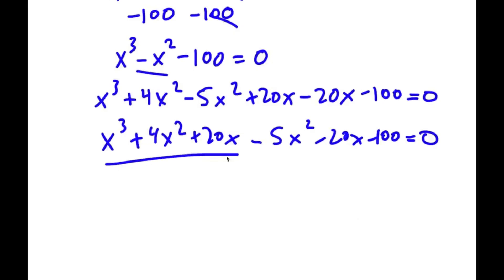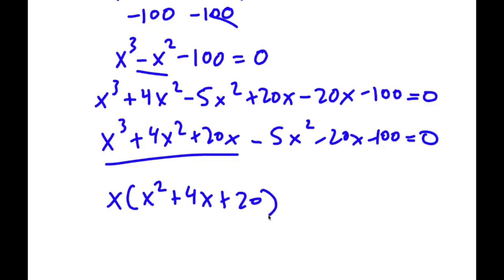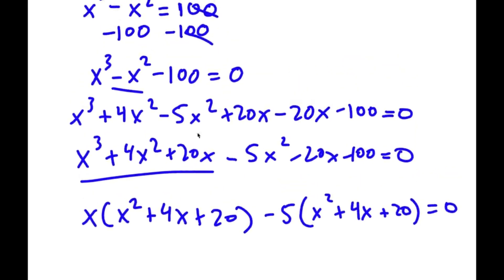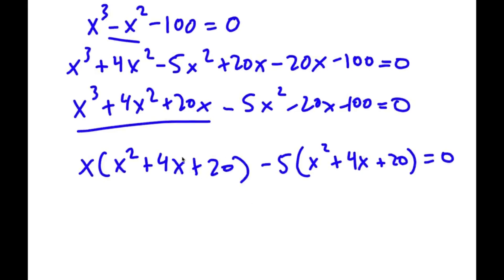Now, from here, what is the greatest common factor of x to the power of 3 plus 4x squared plus 20x? That would be x. So now I have x times (x squared plus 4x plus 20). And then I have minus 5 times (x squared plus 4x plus 20).